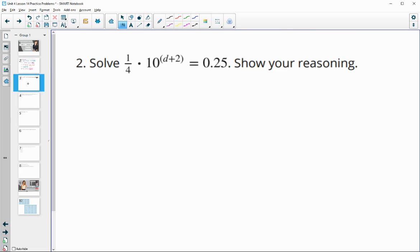Number two, solve this equation and show your reasoning. Let's first isolate where the variable is. We're going to get rid of this 1 fourth, so we multiply by 4 over 1 to both sides to get rid of that.